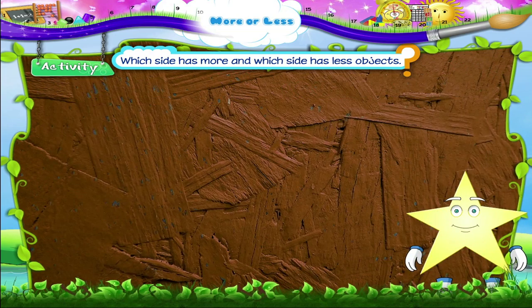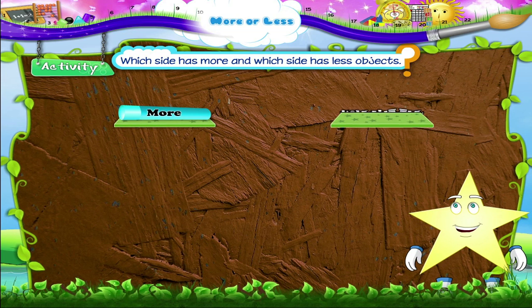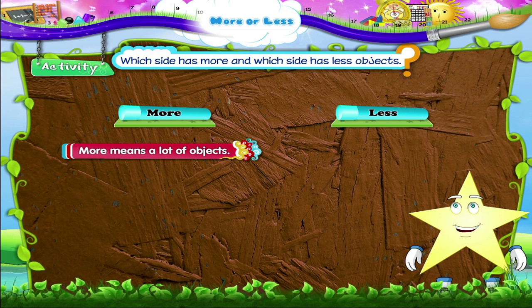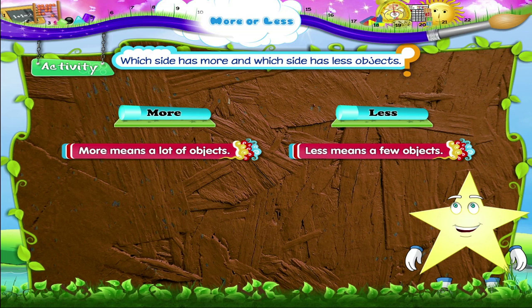So, Starry, you have now learned to identify more and less. More means a lot of objects. Less means a few objects.